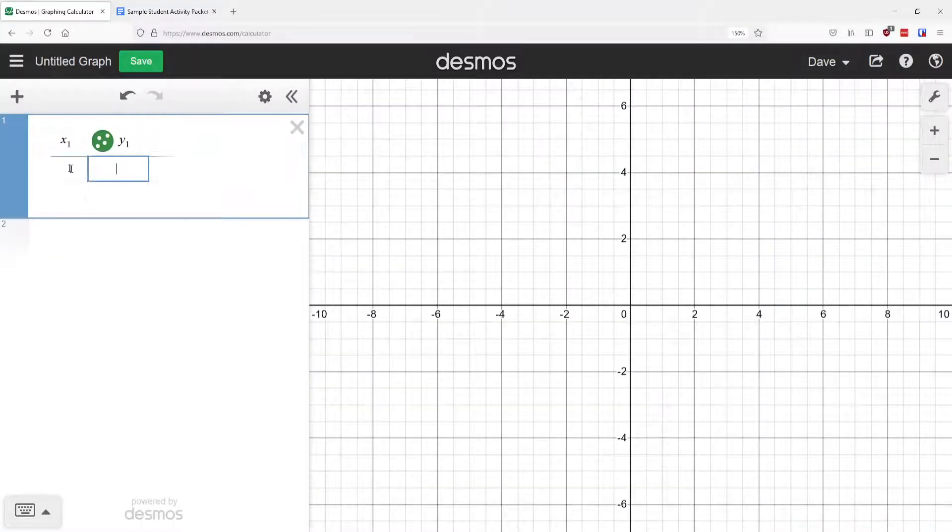So we're going to do 1, 6 on the next line, 2, 8. The next line is 3, 11. The next line is 4, 12. And then 5, 14.